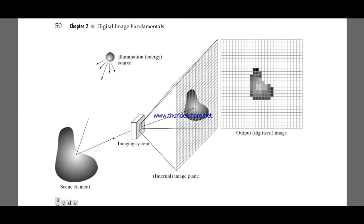So what happens is when you click a photo of this particular object, the camera first puts a grid on it. This grid is variable — you can change the size of the grid and the number of pixels. These small square boxes are nothing but pixels. This grid is put on the object, and wherever the grid matches, a box is created. These small boxes are known as pixels, and each pixel has a particular color value. So this is what we are doing — we are sampling the image.